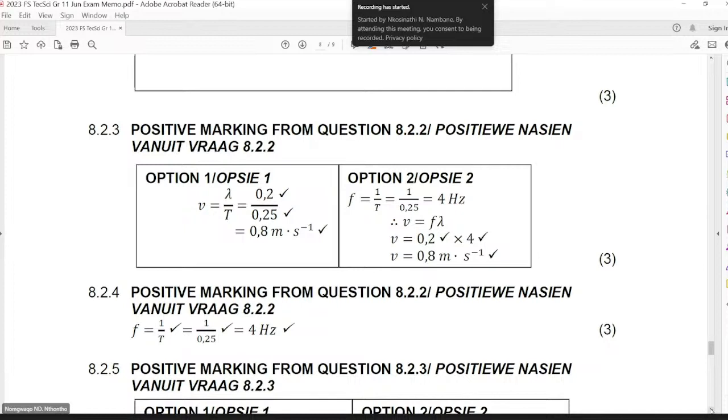That is why on option two we do not award any marks for learners who have calculated the frequency first and substituting it in this formula of frequency multiplied by lambda.